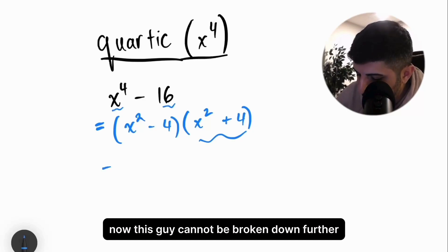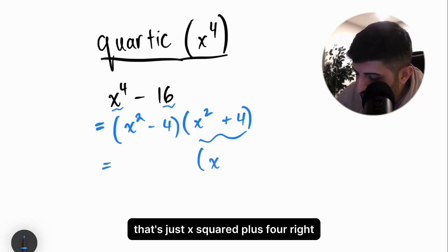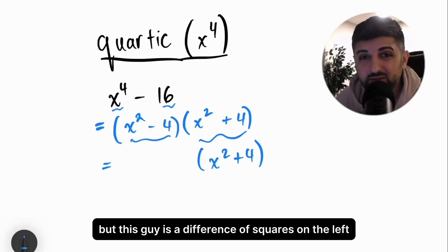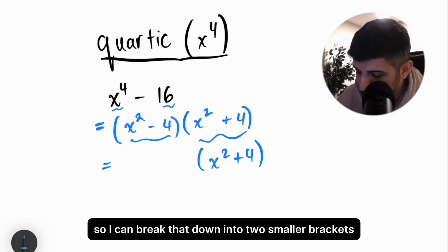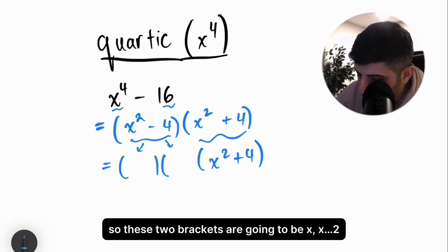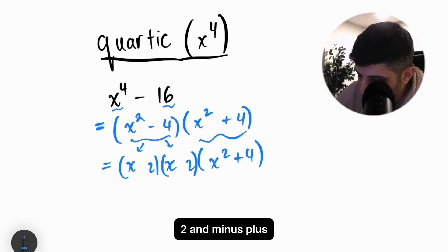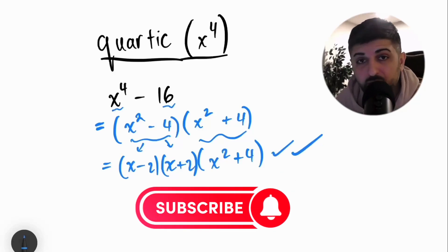Now, this guy cannot be broken down further. That's just x squared plus 4. But this guy is a difference of squares on the left. I can break that down into two smaller brackets. These two brackets are going to be x, x, 2, 2 and minus plus. That is fully factored form for a quartic.